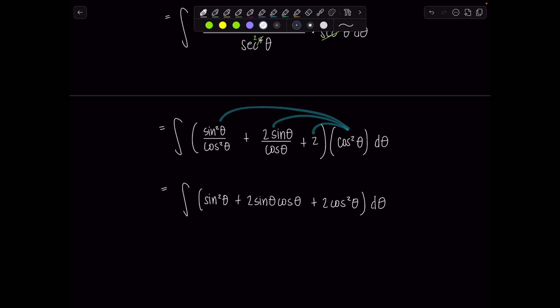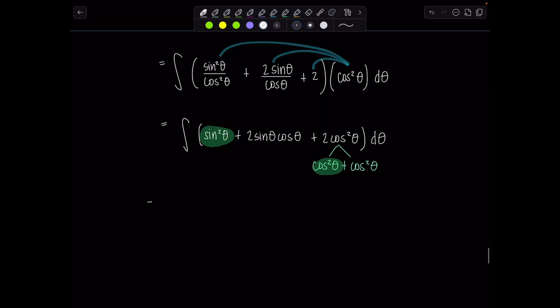Now hopefully your eye goes straight to the fact that we've got a cosine squared and a sine squared. We actually have two of these. So I'm going to split them up into cosine squared theta plus cosine squared theta. And sine squared theta plus cosine squared theta is 1, so I'm just going to rewrite it like so. So we've got integral 1 plus 2 sine theta cosine theta plus, now just 1 cosine squared theta, d theta.